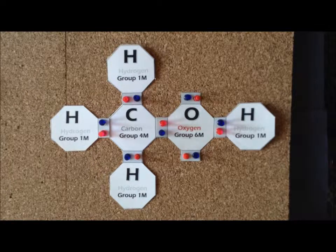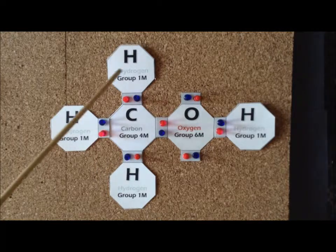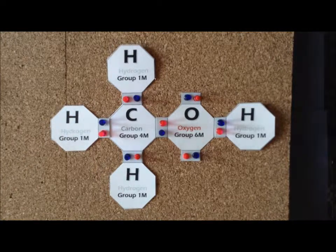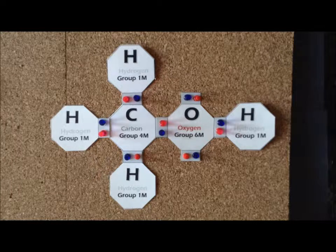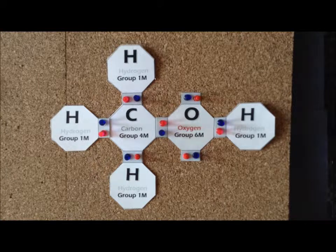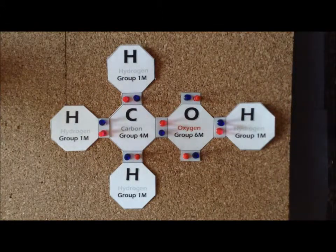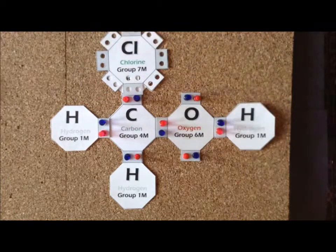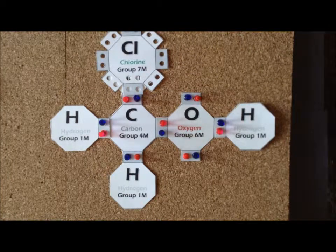In chloromethanol, we replace one of the hydrogen atoms of the methyl group — one of these three hydrogens — with a chlorine atom. The general structure will remain exactly the same, but we have six additional valence electrons to allocate, because chlorine contributes seven valence electrons whereas the hydrogen it replaces contributes only one: seven minus one equals six. Chlorine will still bind to carbon with a single bond in a manner reminiscent of the hydrogen it replaces.